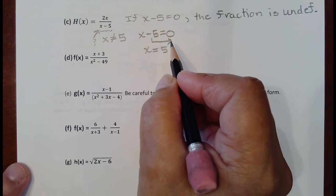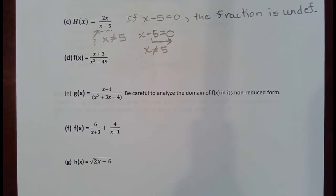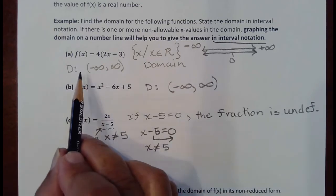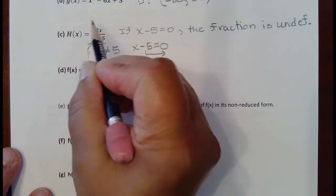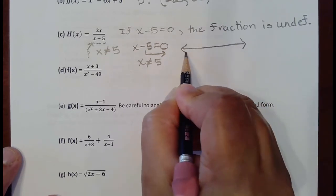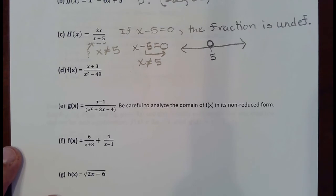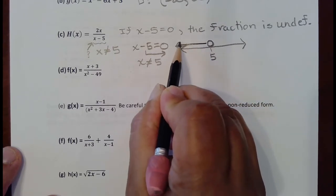Solving x - 5 = 0 gives x = 5, so x is not allowed to be 5. To state the domain, you must mention the non-allowable values. Draw a number line with an open hole at 5. It can be any value to the left of 5 or any value to the right of 5.